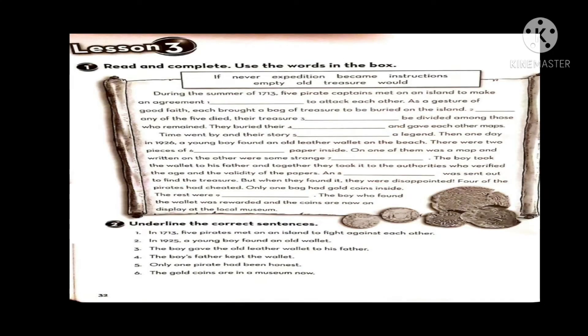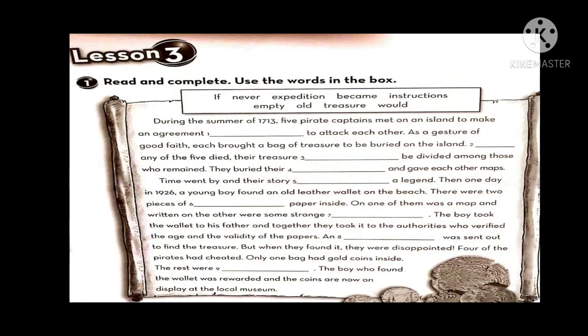As you see on page 32, we have two exercises. Exercise number one is a paragraph with some words in the box. We need to fill in the blanks and complete the sentences with these words. Exercise number two has some sentences where we need to underline the correct sentences. Let's start together with exercise number one.